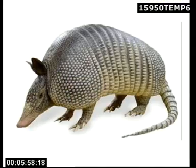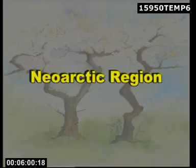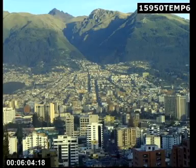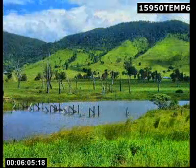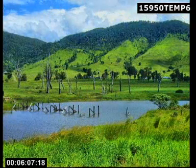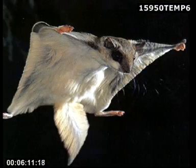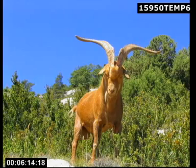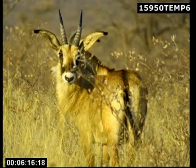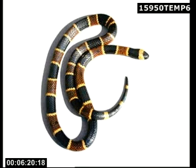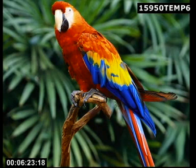Nearctic Region. This includes Mexico and Greenland. Important animals are: Armadillo, Flying Squirrel, Wild Goat, Antelope, Swan, Vulture, Rattlesnake, Coral Snake, Parrot and Pit Viper.